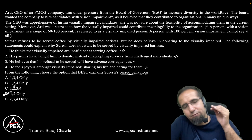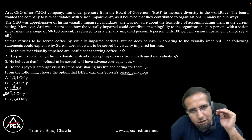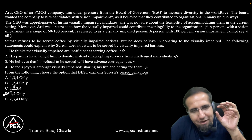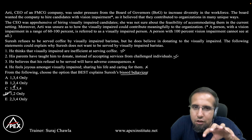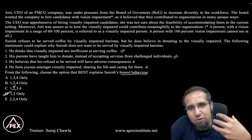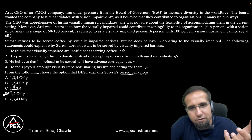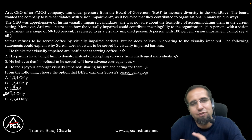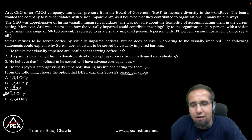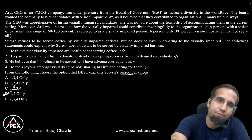Statement 3: he believes his refusal to be served will have adverse consequences — this has nothing to do with the existing scenario or his biased behavior. Statement 4: he feels joyous amongst visually impaired, sharing his life and caring for them — this completely contradicts his biased behavior; if he feels joyous among them there should be no problem accepting coffee. Statements 1 and 2 clearly explain his biased behavior. Therefore, the answer is option D, which covers statements 1 and 2 only.